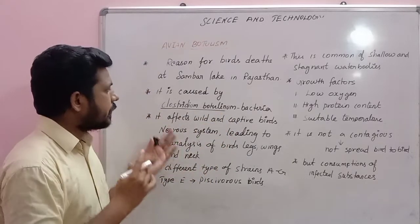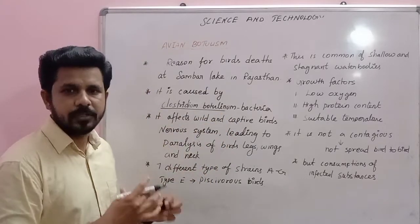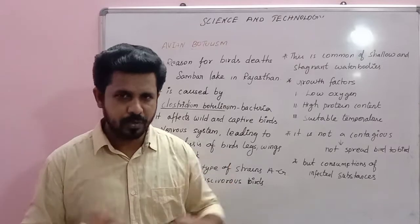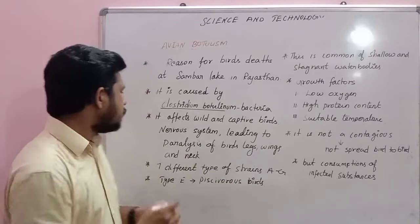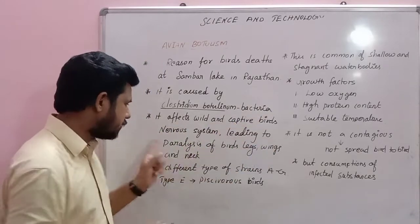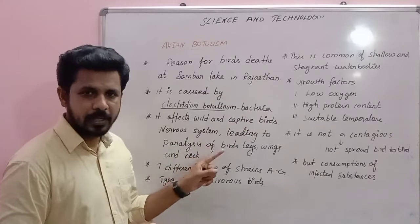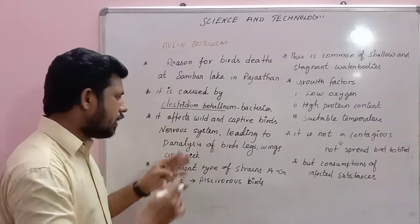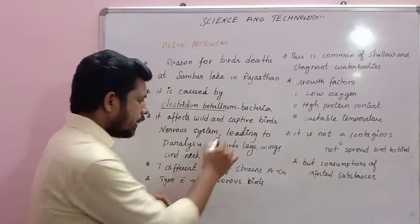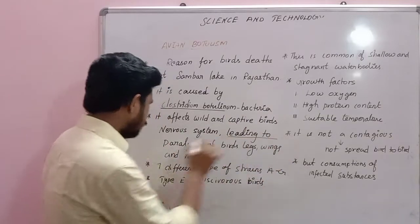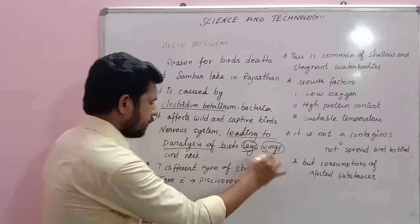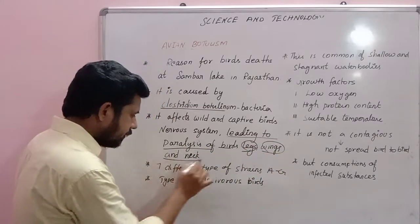This bacterium affects wild and captive birds. Due to damage of the nervous system, it leads to paralysis of the birds' legs, wings, and neck.